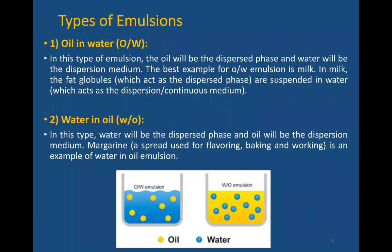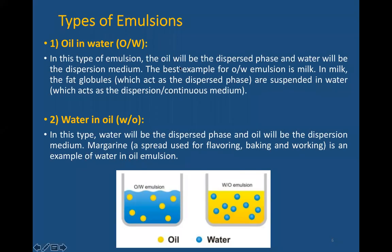Different types of emulsion: oil in water — here oil is the small dispersed droplets and water is the continuous phase. In water in oil, the maximum amount is oil and a very small amount of water is dispersed. Examples: oil in water emulsion includes milk, where fat globules are suspended in water. Water in oil emulsion includes margarine — a spread used for baking or cooking — where dispersed particles are distributed in the continuous phase.